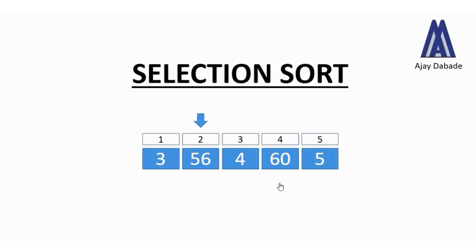After swapping, we move the pointer to the next position — position 2, which is number 56. Now we try to find the smallest number from position 2 to position 5. The smallest number is 4, so we swap 4 with number 56.